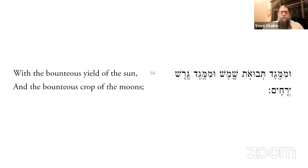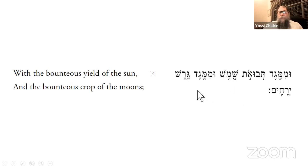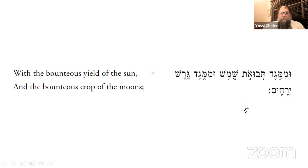There is an allusion to this in the blessings of Moshe Rabbeinu, Vezot HaBerachah. It mentions there the yield of the moon, the bounteous crop of the moon, with the words 'meged geresh yerachim.' Now 'geresh' is related to the word 'gerushin,' meaning divorce. So 'geresh' and 'yerach' somehow seem to be linked — that is the allusion brought down in our commentaries to explain why the term 'yerach' is used in the get.